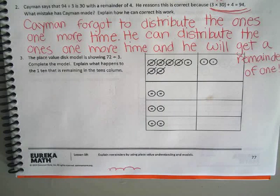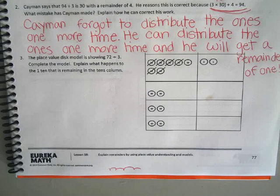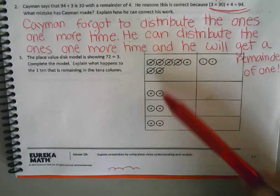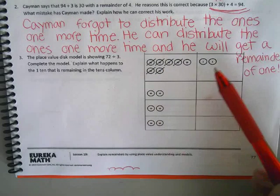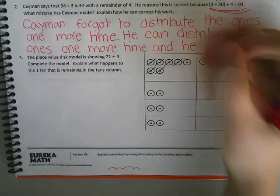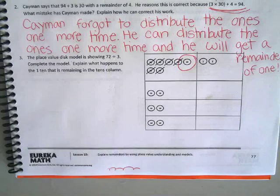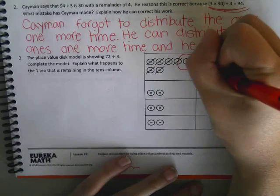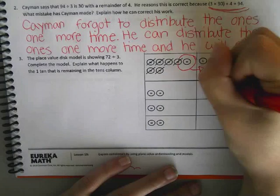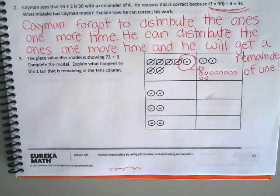Number three. The place value disk model is shown: 72 divided by 3. Complete the model. Explain what happens to the one 10 that is remaining in the 10s column. They distributed their 10s for us — do you agree? One 10 is left. So what should they do with that 10? Move it over and put 10 ones in. So now they have 10 more ones there.